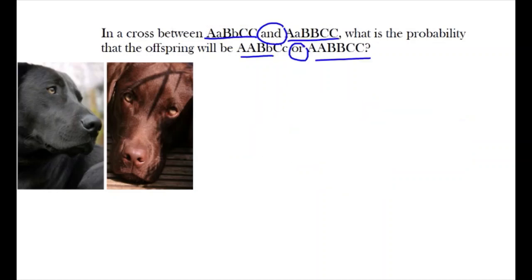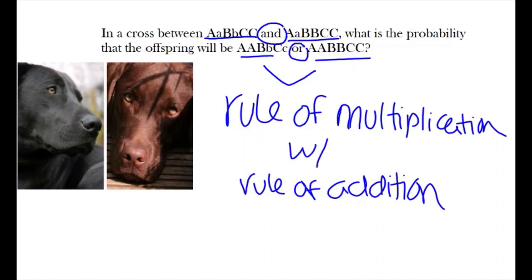In this question, since we are asking for the probability of two separate events both occurring to create two different alternatives, then we'll be using the rule of multiplication with the rule of addition.